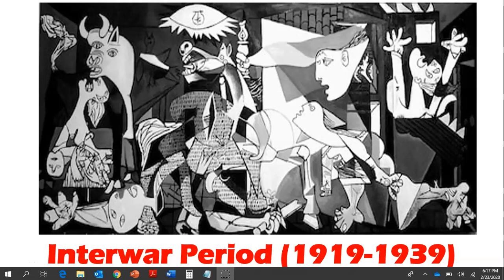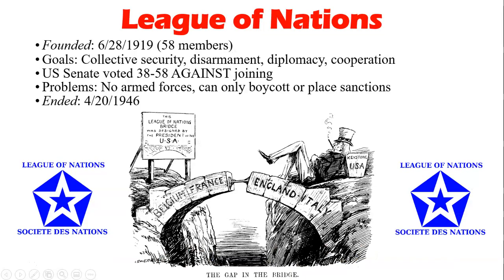Welcome, ladies and gentlemen, to the second PowerPoint for Unit 7. We're going to go into the interwar period. We ended with Wilson's 14 points, and that's going to lead into the League of Nations. This was founded in 1919, and it had 58 members. The goals were collective security, disarmament, diplomacy, and cooperation. Despite the fact that our president came up with this great idea, our Senate did not approve it. We did not join it. The problems of the League of Nations were that there were no armed forces behind it — it could only boycott or place sanctions. It ended in 1946 and was replaced by the United Nations.